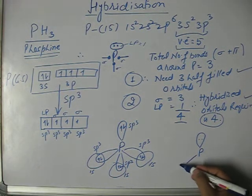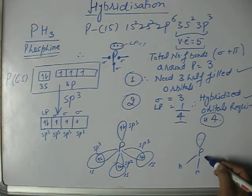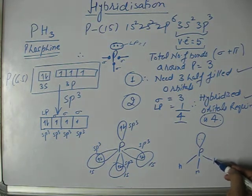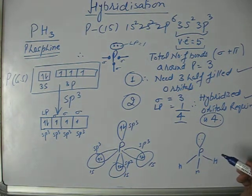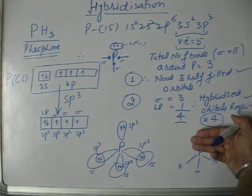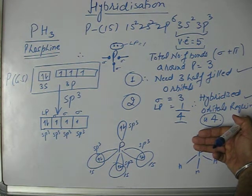In normal representation, the skeletal arrangement means the lone pair and bond pairs are in a tetrahedral fashion around phosphorus. But while deciding the shape, we see this part is a pyramidal part.